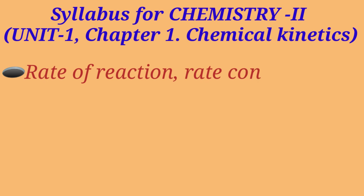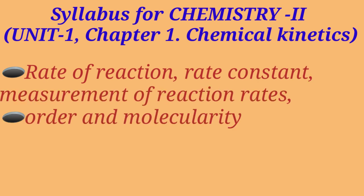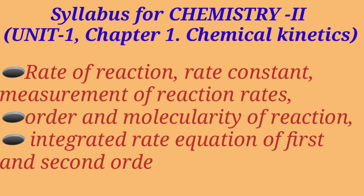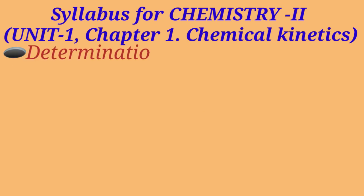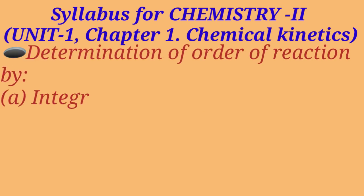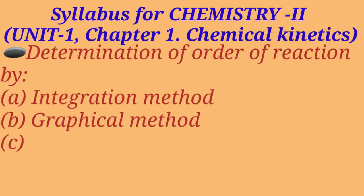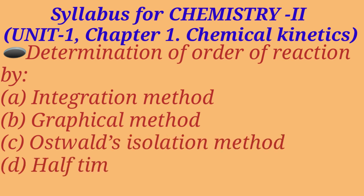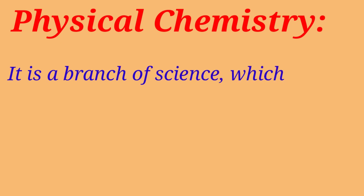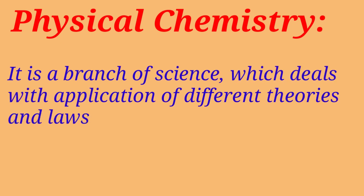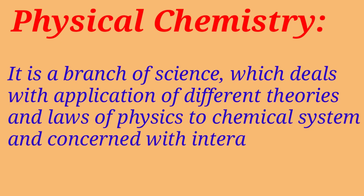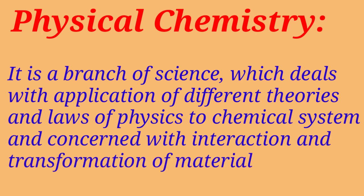Now let's take a quick view of the syllabus of Unit 1, Chapter 1: Chemical Kinetics. This unit 1 is based on physical chemistry. So the question arises, what is physical chemistry? It is a branch of science which deals with application of different theories and laws of physics to chemical systems, and it is also concerned with interaction and transformation of material.